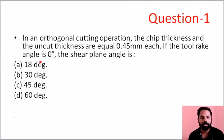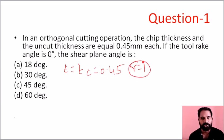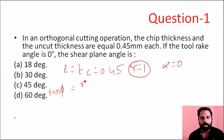Let's solve the first problem. The uncut chip thickness T is equal to 0.45, the chip thickness Tc is equal to 1, and the rake angle α is equal to 0 degrees. We need to find the shear plane angle φ. We know that tan φ equals R cos α divided by 1 minus R sin α.